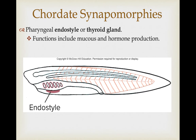Associated with the pharyngeal gill slit is a pharyngeal endostyle, which has been modified to form a thyroid gland in some vertebrates. Early functions of this structure include simply the production of mucus used in feeding, but it is also associated with the production of hormones.